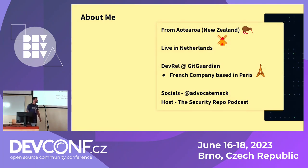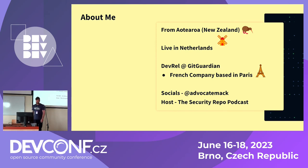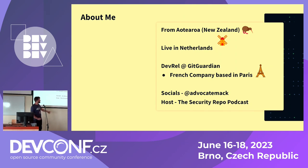A little bit about me first — my name is McKenzie. I'm from Aotearoa, New Zealand, but now I live in the Netherlands and I work for a French company called GitGuardian. You can find me anywhere on my socials at Advocate Mac.